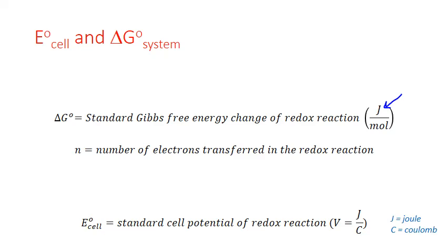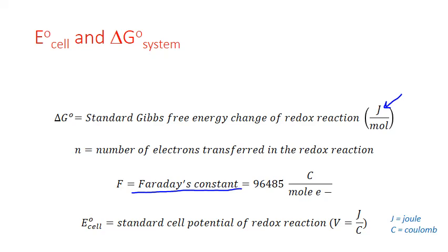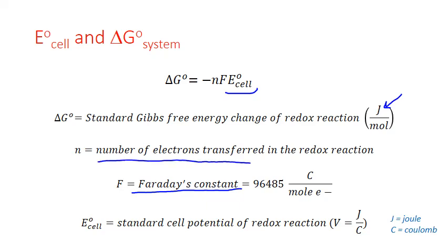The charge transferred is determined by the number of electrons transferred from the oxidation half reaction to the reduction one. We can figure this out by looking at the balanced number of electrons between those two half reactions. We use Faraday's constant, which gives us the total charge for one mole of electrons: 96,485 coulombs per mole of electrons. To convert from E sub cell to delta G, we take our standard electrochemical cell potential in joules per coulomb, multiply by Faraday's constant, and multiply by the number of moles of electrons transferred. The units cancel to give joules per mole.